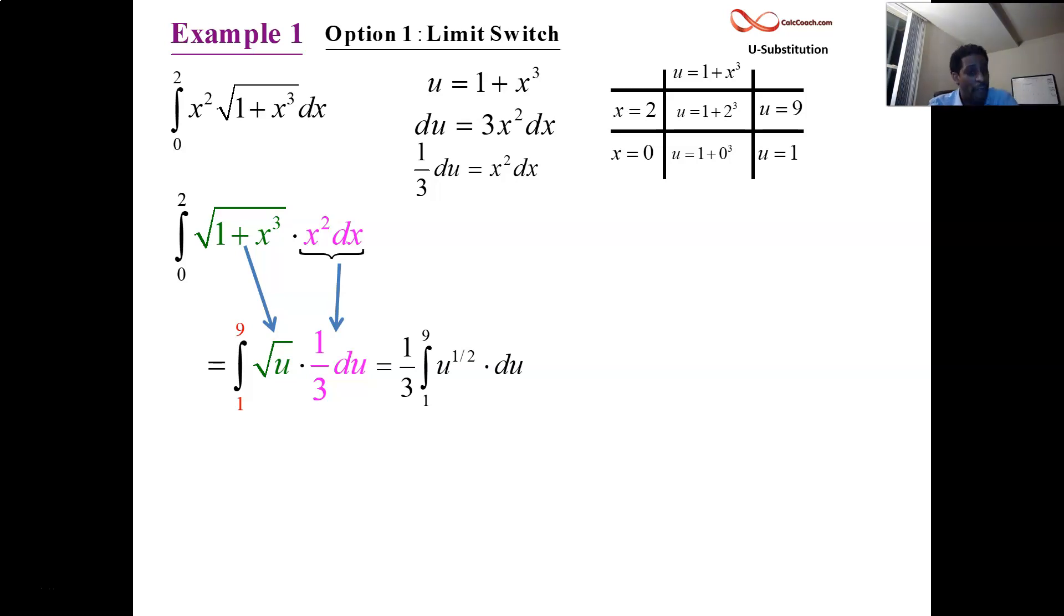Dividing by 3 halves is the same thing as multiplying by 2 thirds. So you have the 1 third who's already out there from the u sub. This 2 thirds is out there from the power rule in reverse. We can put those constants together. I like to put my square brackets around the actual function that I'm plugging in. If there's constants, I want to pull them out. Let's call it 2 ninths. Let's put 9 to the 3 halves and subtract 1 to the 3 halves.